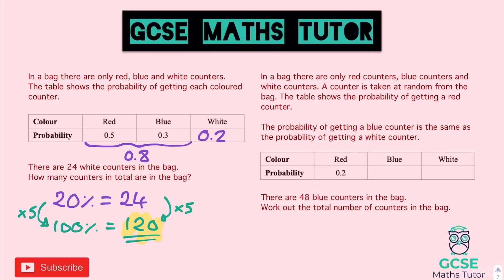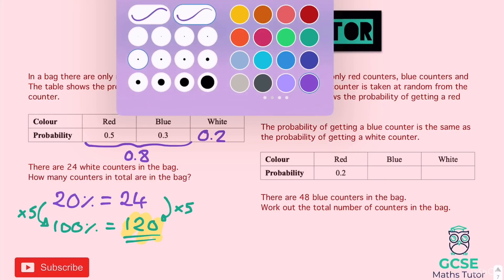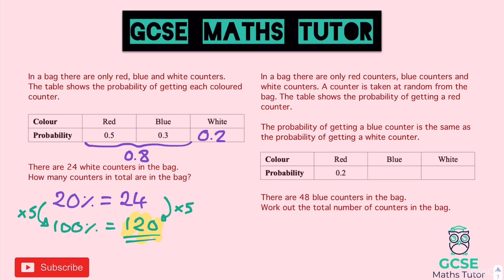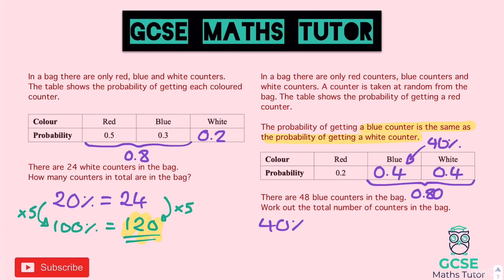For the second reverse percentage question, we're given that the probability of red is 0.2, and the probability of blue equals the probability of white. So the remaining 0.8 is split equally between blue and white. Half of 0.80 is 0.40, so each is 40%. There are 48 blue counters, so 40% = 48.